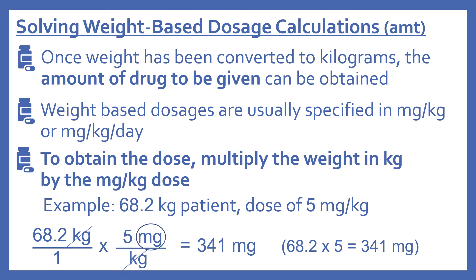Once the weight is in kilograms, multiply it by the mg/kg dose to get the patient's dose. For example, a 68.2 kg patient with a dose of 5 mg/kg: 68.2 × 5 = 341 milligrams. Setting up the fractions — 68.2 kg over 1 times 5 mg per kg — the kilograms cancel, leaving milligrams: 68.2 × 5 ÷ 1 = 341 mg.